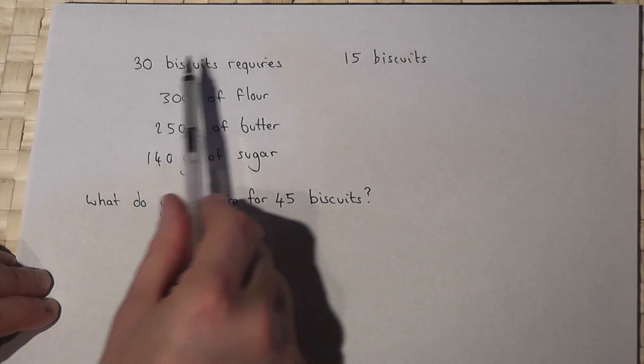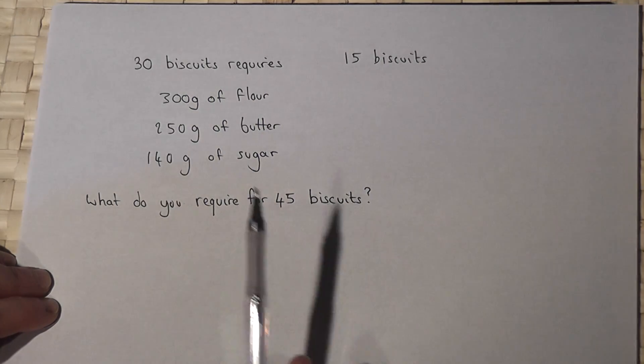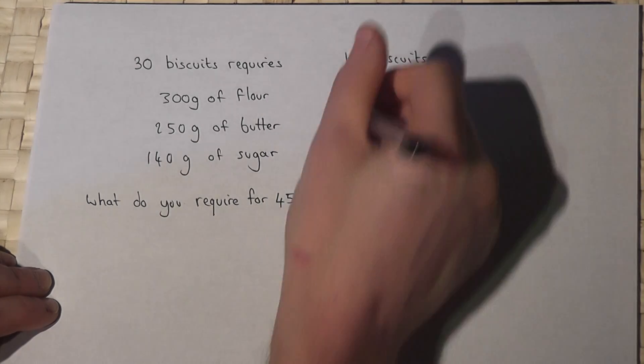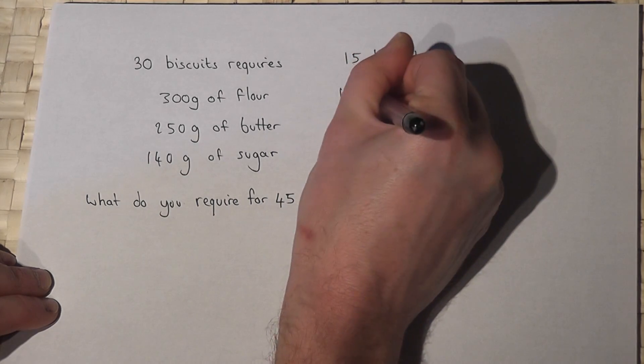Now 15 is half of 30, so if 30 biscuits require 300 grams of flour, then 15 require half of that, which is 150 grams of flour.